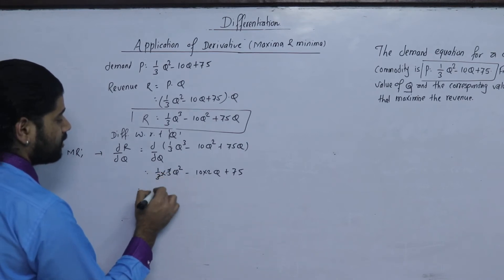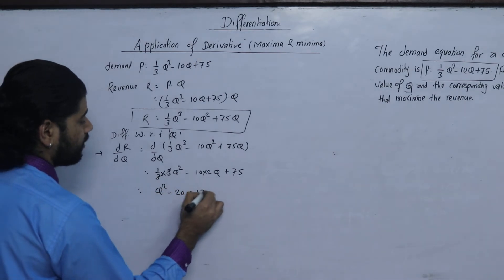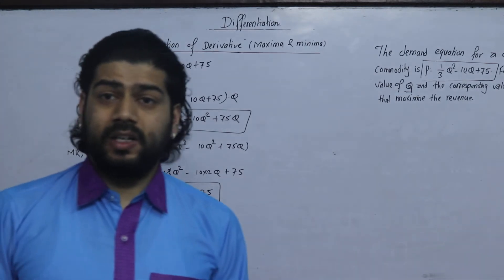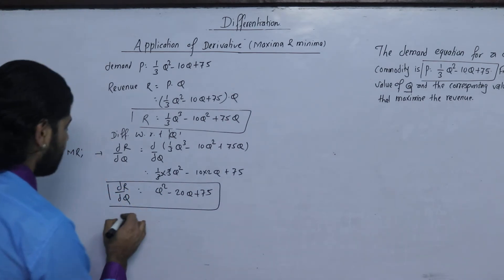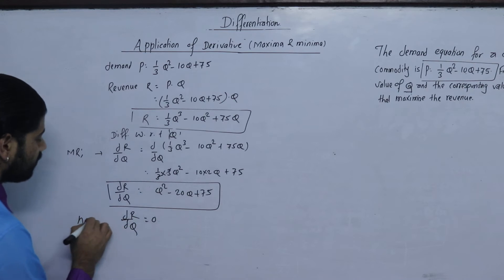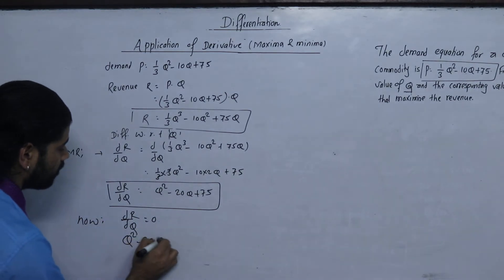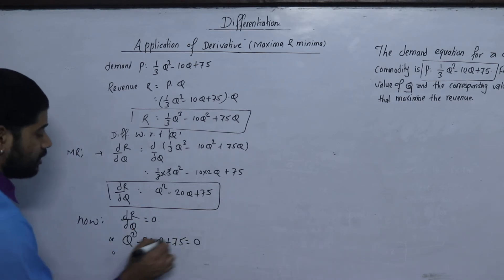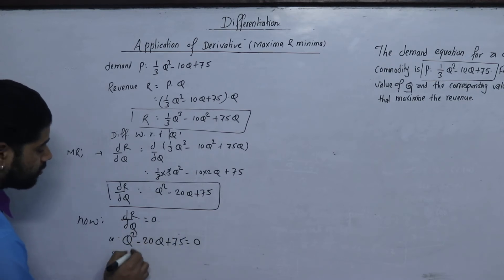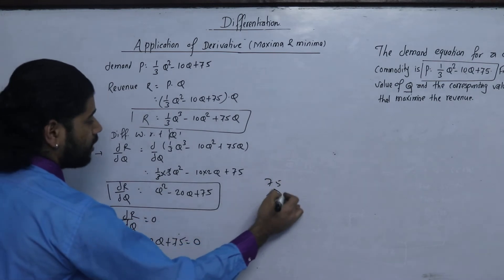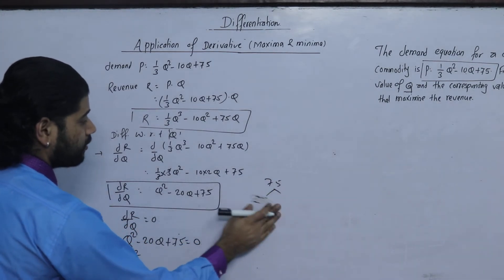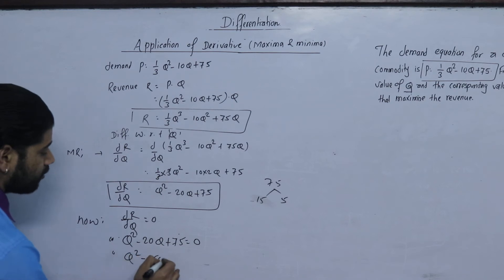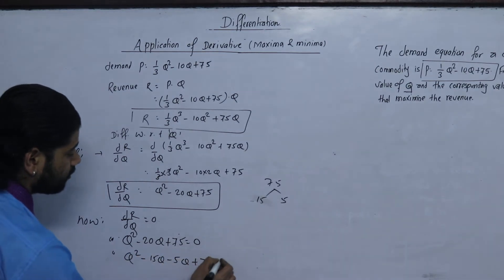We can see the derivative of the revenue function is Q squared minus 20Q plus 75. The second step is to find the stationary point by setting the derivative equal to zero: Q squared minus 20Q plus 75 equals 0. Factoring: 75 gives us Q squared minus 15Q minus 5Q plus 75 equals 0.